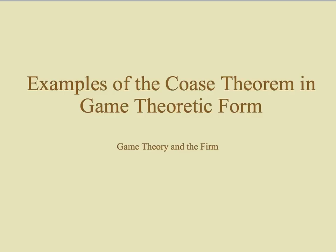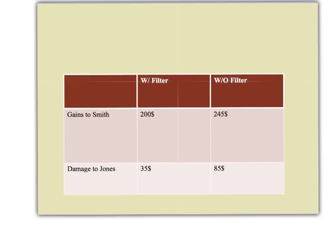Now we're going to look at some firms in the setting of the Coase theorem, where externalities with low or zero transaction costs could be bargained away. We'll utilize the tools of game theory to analyze firms in that setting. Here on the top row we have the gains to Smith and here the damage to Jones. This question comes from Robert Frank's textbook Microeconomic Behavior. Smith can produce with or without a filter, and production without a filter results in greater damage to Jones. The relevant gains and losses are shown in this payoff matrix.